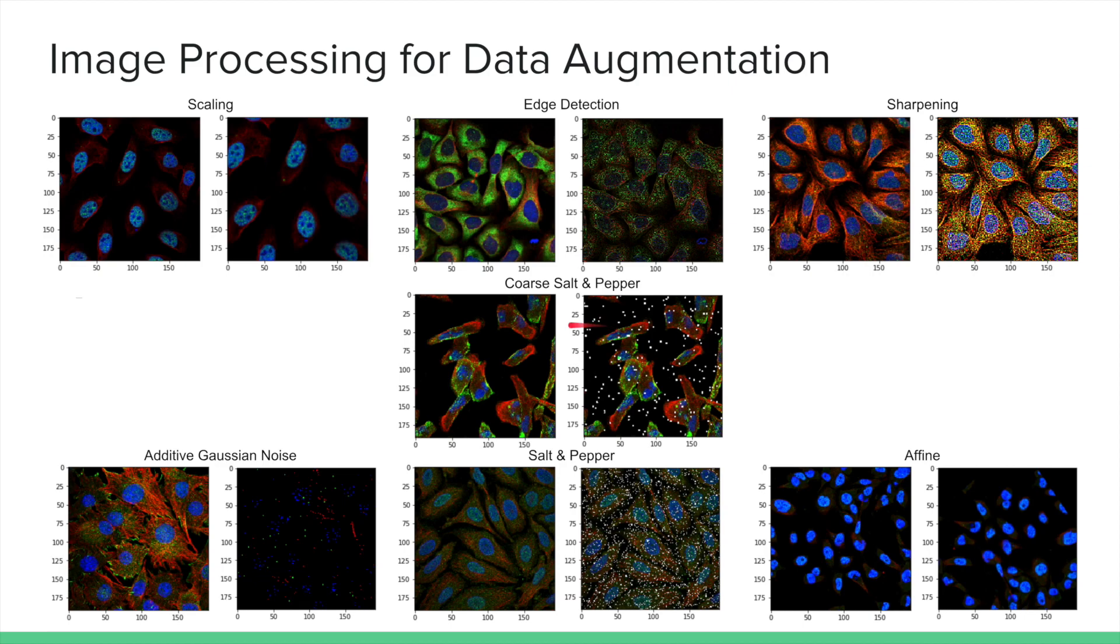The two salt and pepper methods add black and white pixels or rectangles, the additive Gaussian noise method adds white noise, and the affine method adds various affine transformations to the image. We hypothesized that sharpening would provide the best results and additive Gaussian noise would provide poor results.